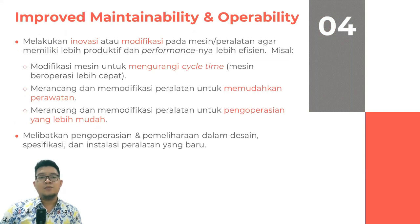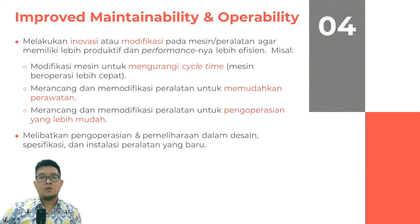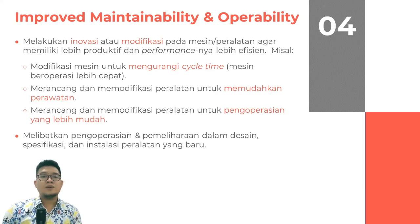Pilar yang keempat adalah Improve Maintainability dan Operability. Dalam hal ini kita lebih berinovasi agar peralatan yang kita gunakan bisa lebih baik lagi atau memiliki performa yang stabil. Pada pilar empat ini melakukan inovasi ataupun modifikasi pada mesin atau peralatan agar lebih produktif dan performance yang lebih efisien. Misalnya, kita melakukan modifikasi mesin untuk mengurangi cycle time sehingga mesin dapat beroperasi lebih cepat dan menghasilkan output lebih banyak. Kita juga melakukan perancangan dan modifikasi peralatan untuk lebih mudah lagi dilakukan perawatannya dan untuk dapat digunakan lebih mudah, dengan melibatkan pengoperasian dan pemeliharaan dalam desain spesifikasi dan instalasi peralatan yang baru.